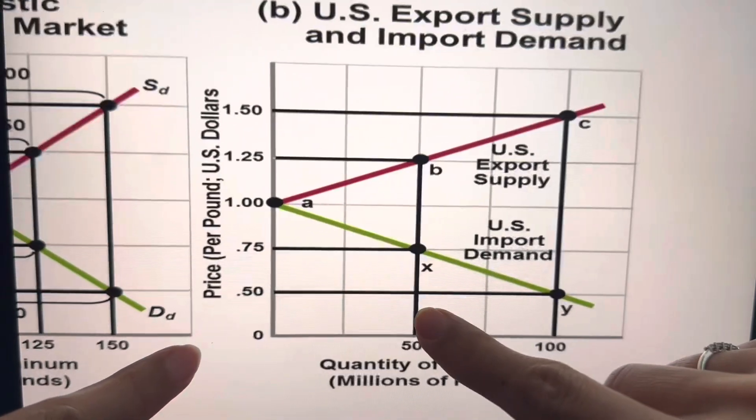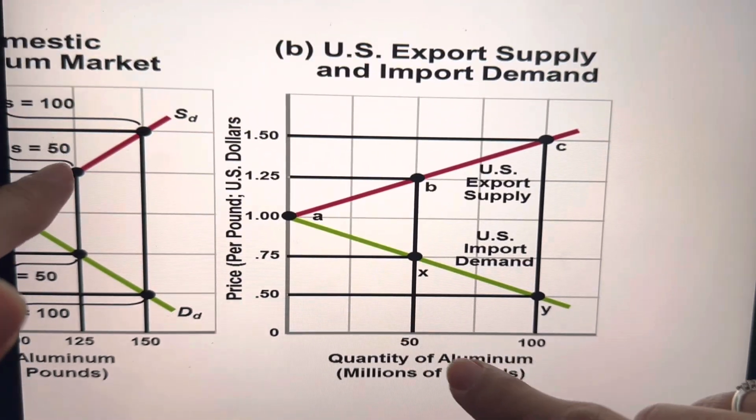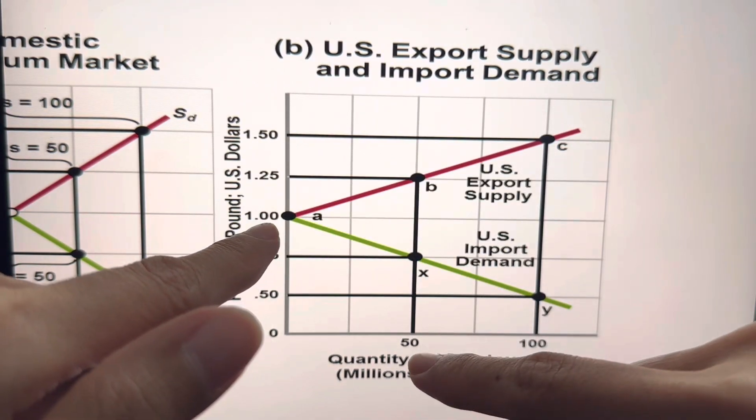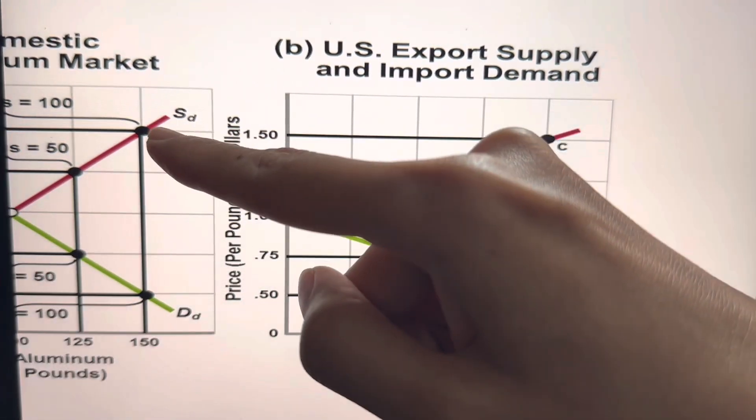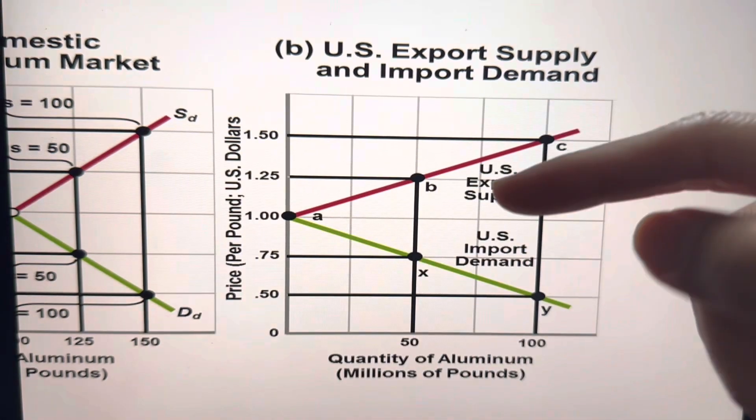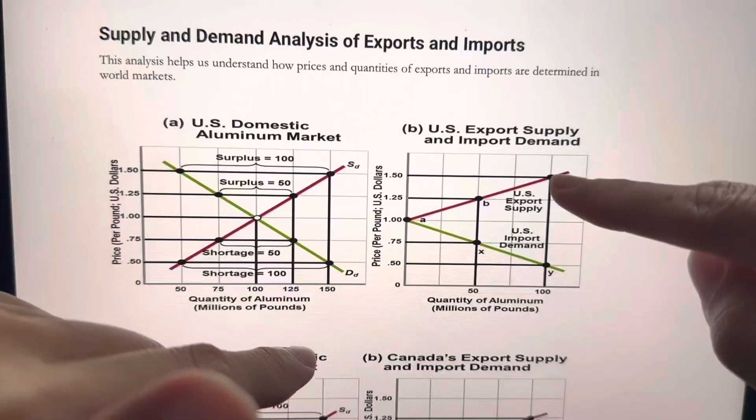So looking this side, when we have a surplus of 50, U.S. is able to export 50 units of aluminum. When there's an excess supply of 100 units, U.S. is able to export 100 units.